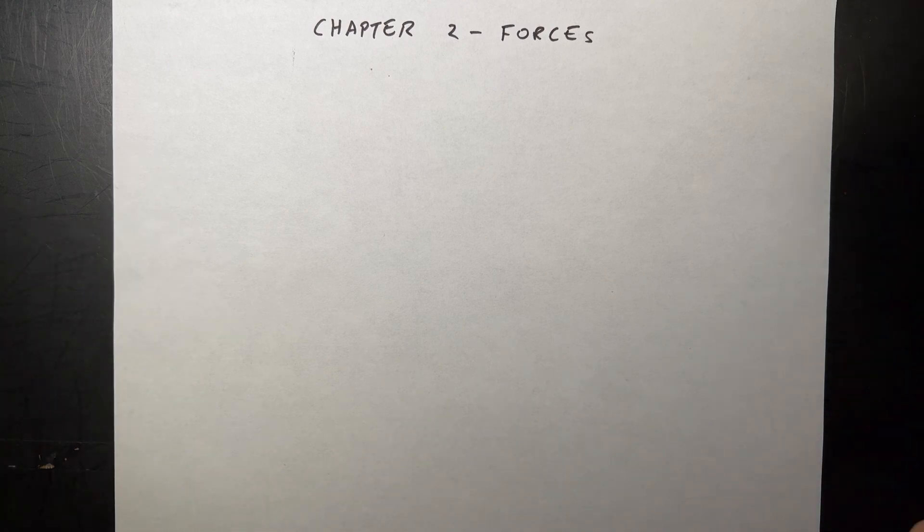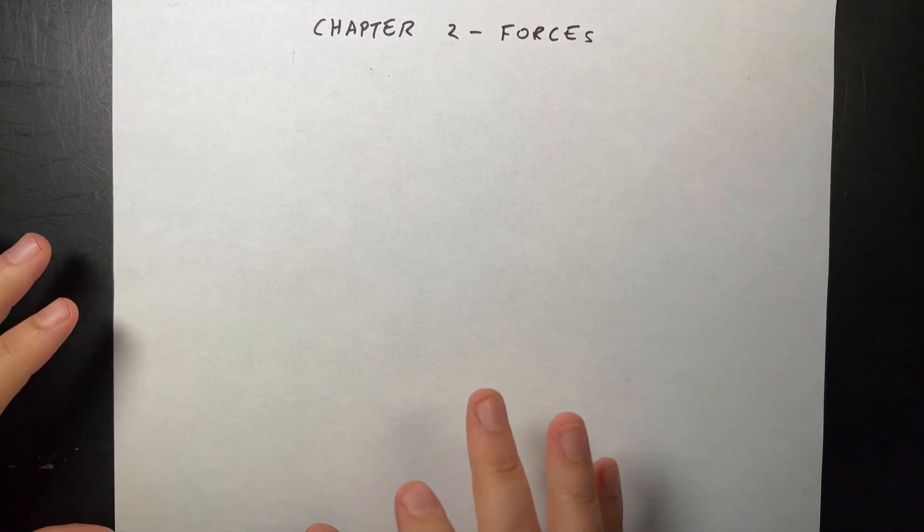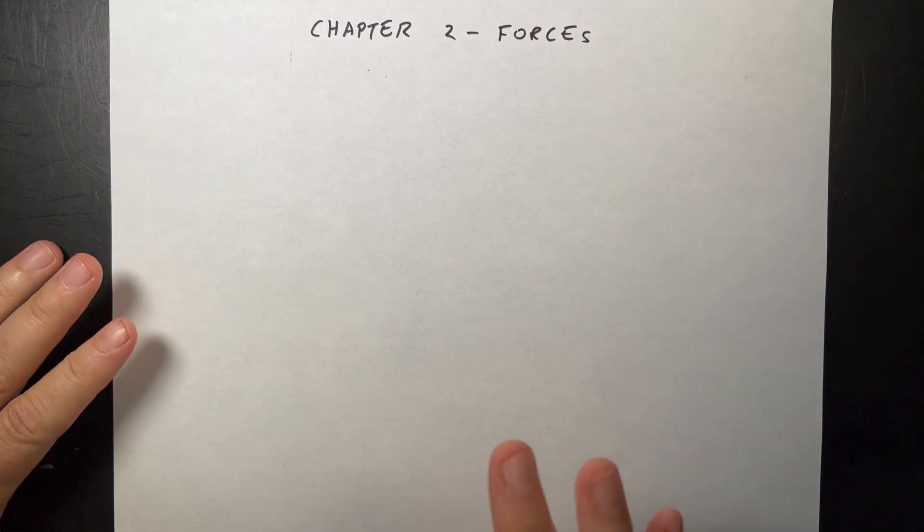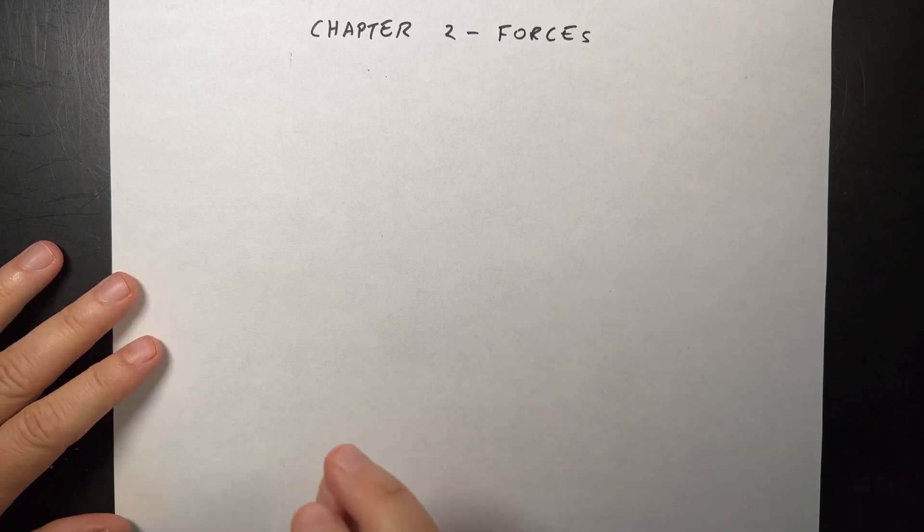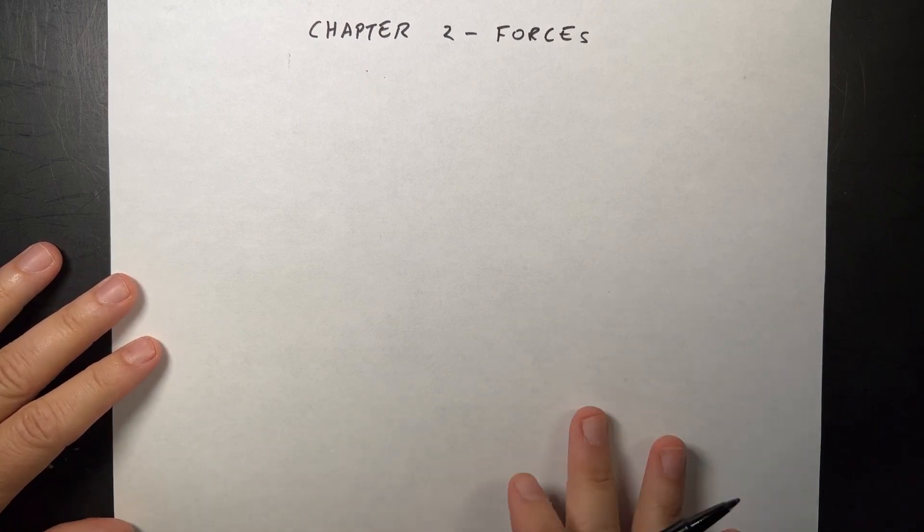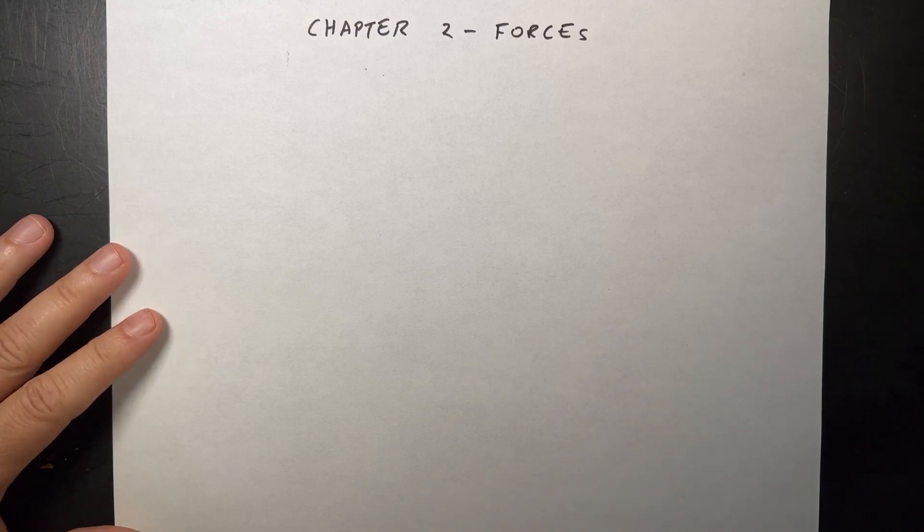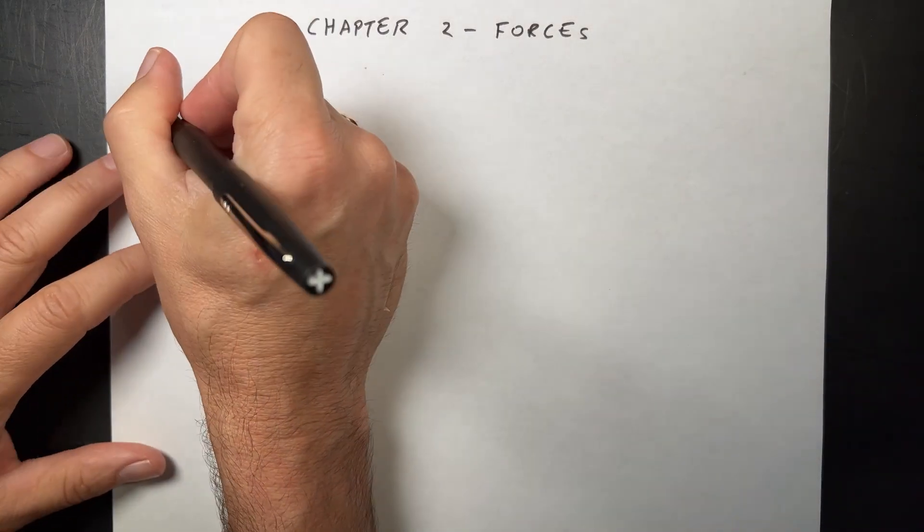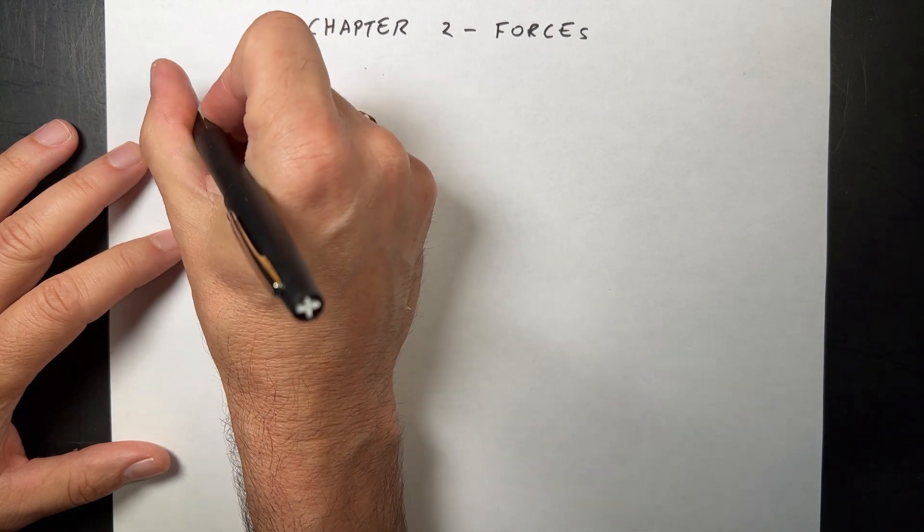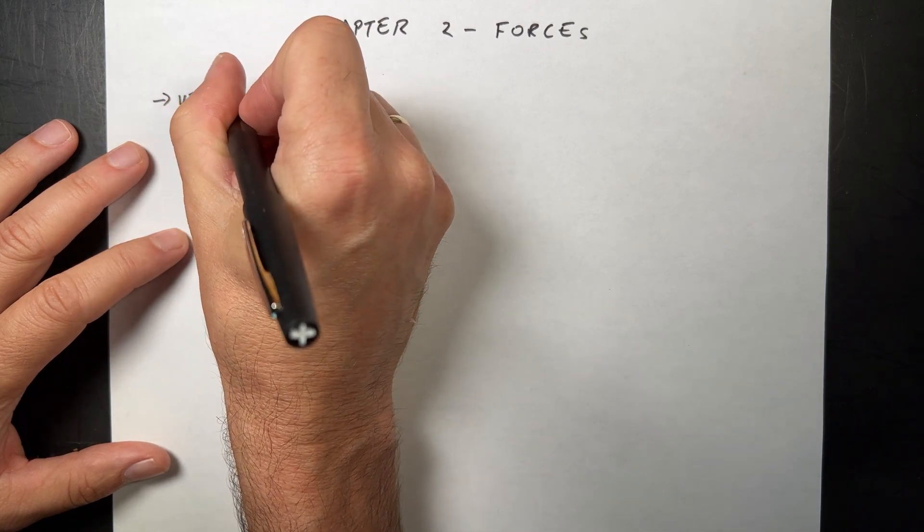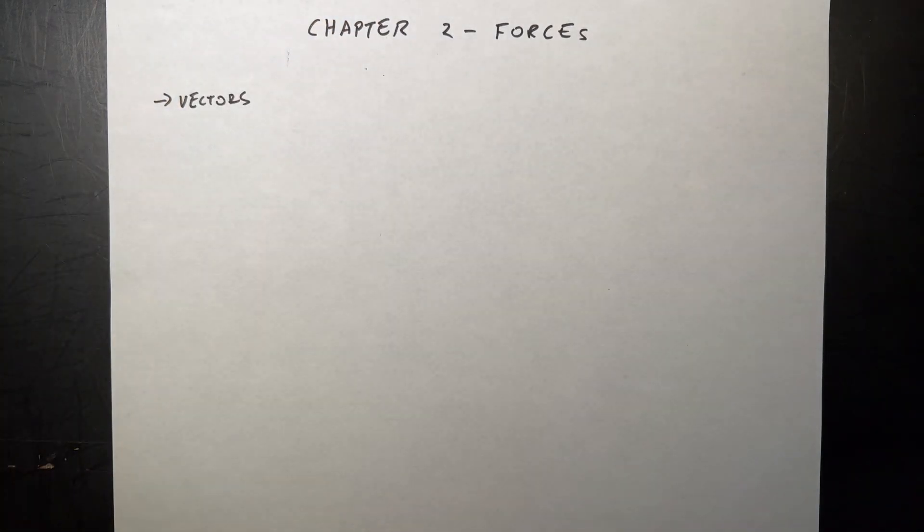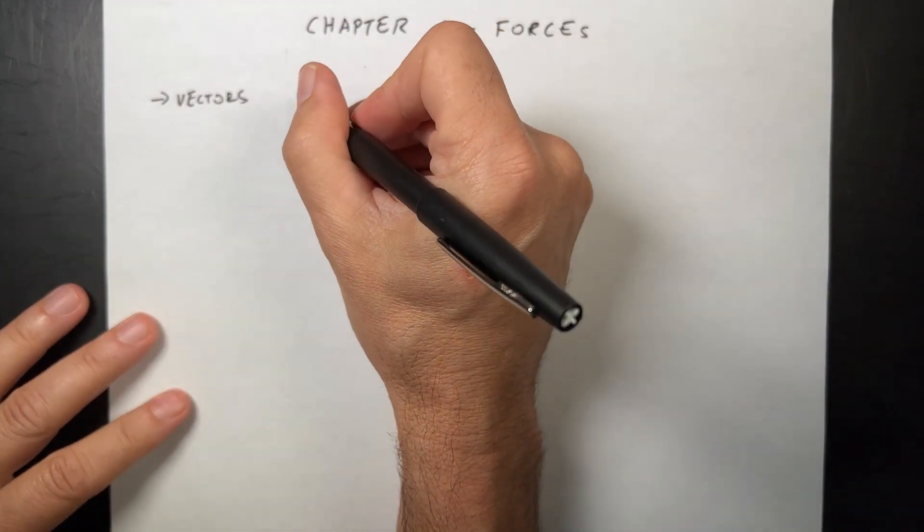This book has some things in a slightly different order. A lot of times textbooks will start off with kinematics - velocity, position, acceleration - and then go into forces. This one starts off with forces first. And the most important thing in here is vectors. Why? Because force is a vector.